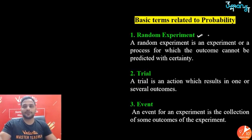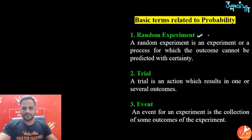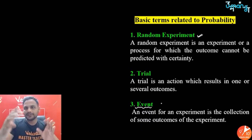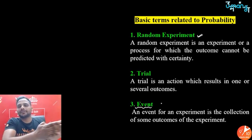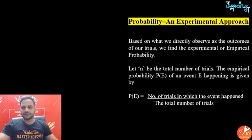A trial means doing the experiment — how many times we have done that experiment. A trial is an action which results in one or several outcomes. An event is the collection of some outcomes; it can be one outcome or a group of outcomes. Event is what you want to calculate the probability for.